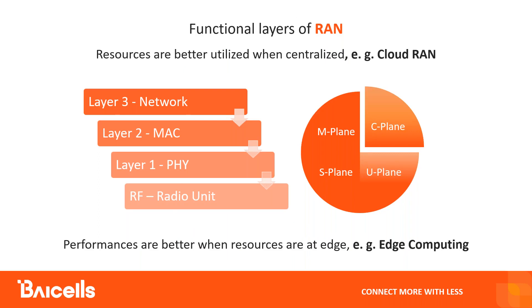Now let's look at Open RAN with some deep dive. Traditionally, the RAN Radio Access Network is a black box — it's closed. When you get base stations, you don't see what's inside because everything is built in a black box. The concept of Open RAN is trying to make it a white box — a box that you can see inside, so that you can pick and choose the tools that make the radio access network more efficient, cost effective, and more intelligent.